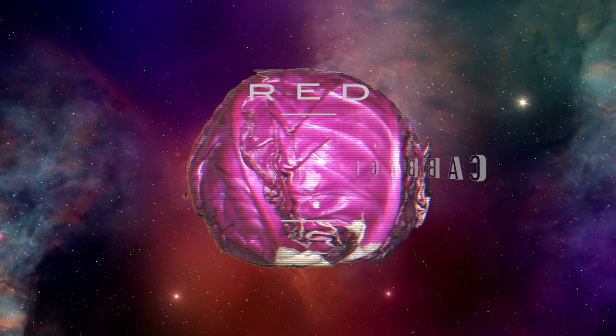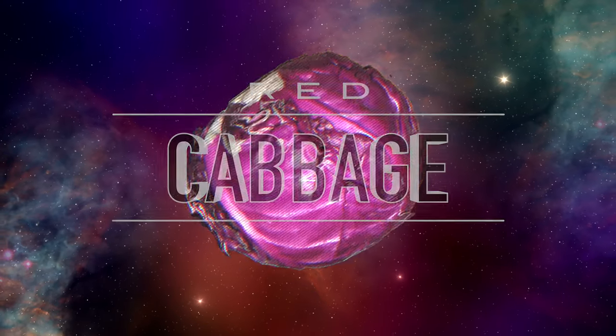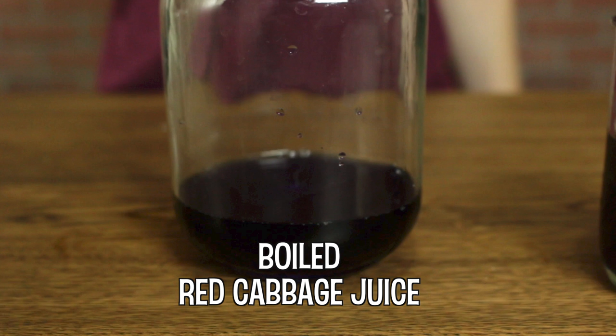But you can test the pH of liquids in your house with glorious red cabbage juice. Side note, this has to be the only good use of red cabbage. All you do is boil red cabbage until the water starts turning a dark bluish purple.